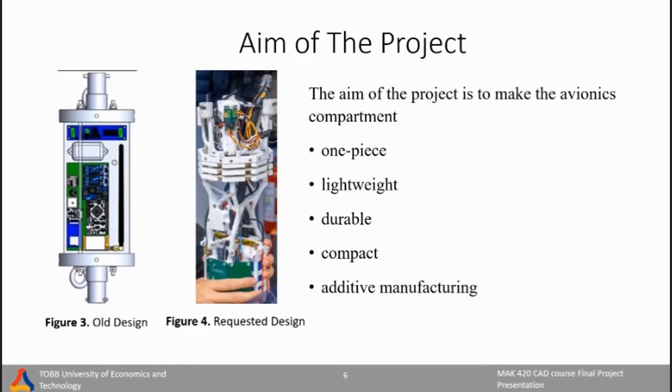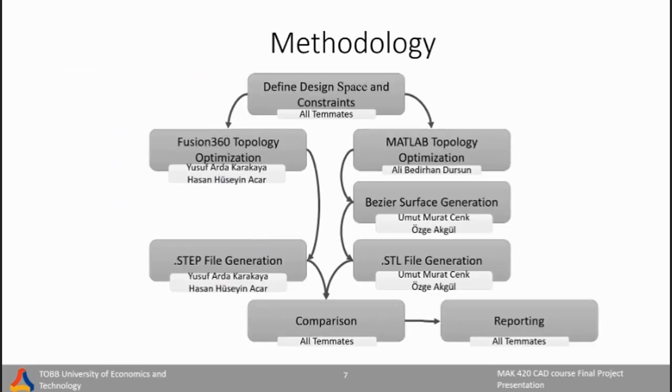Our project focuses on transforming the Avionics Compartment into a single piece unit that is lightweight, durable, and compact. We employ additive manufacturing techniques to optimize the design, moving from the old to a newly requested configuration as illustrated in Figure 3 and Figure 4. Our approach starts by defining the design space and constraints, followed by using Fusion 360 for topology optimization. We further enhance our design process with MATLAB for additional topology optimization and Bezier surfaces generation. The outcomes include generation of STL and STEP files, comparisons, and comprehensive reporting by all team members.